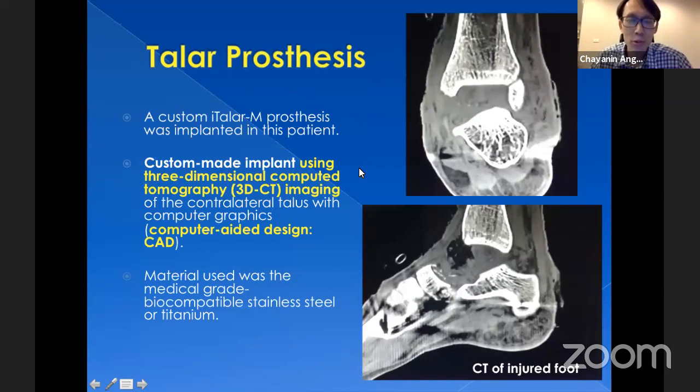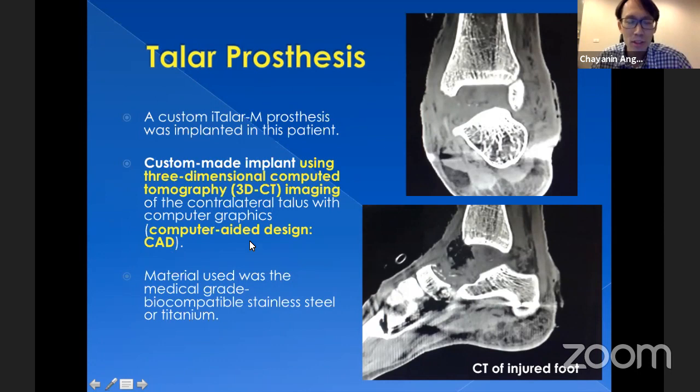In this case, he's quite young and did not want fusion, so I decided to do total talus prosthesis replacement. We used a custom-made talus for this patient. I used three-dimensional CT imaging of the contralateral talus with computer-aided design, or CAD, to do the mirroring from the contralateral talus to be the ipsilateral talus. We produced it using medical-grade biocompatible stainless steel in this case, and in later cases we used titanium.